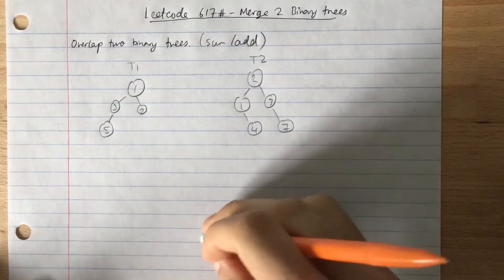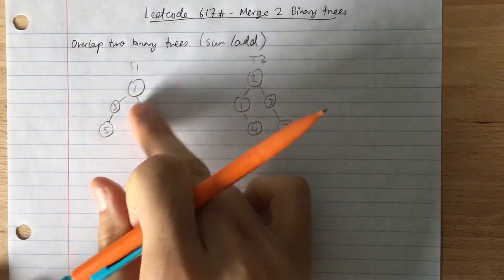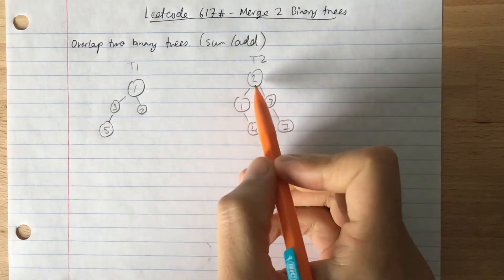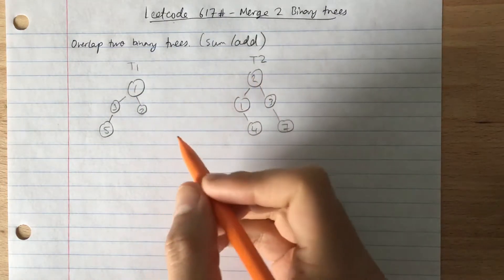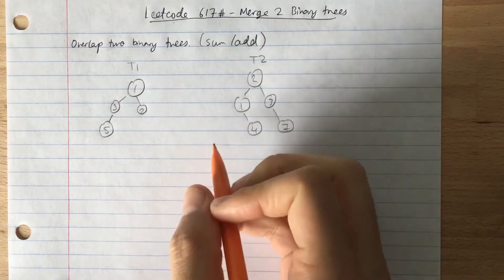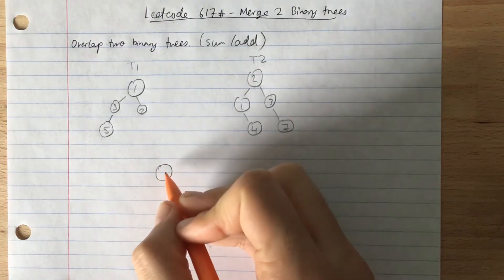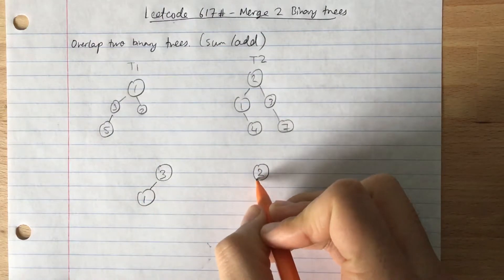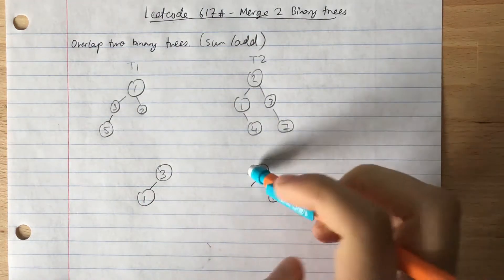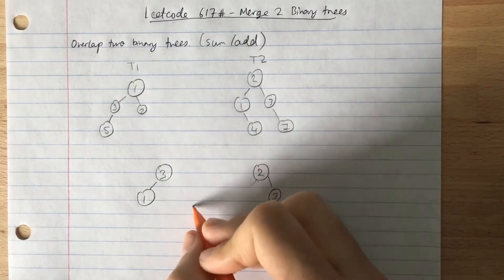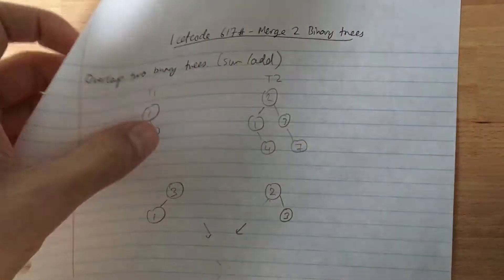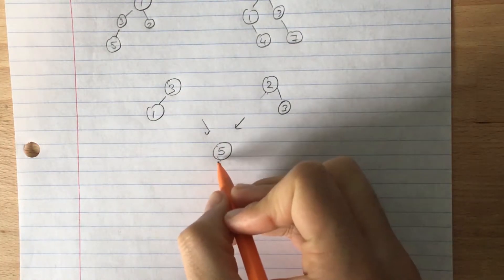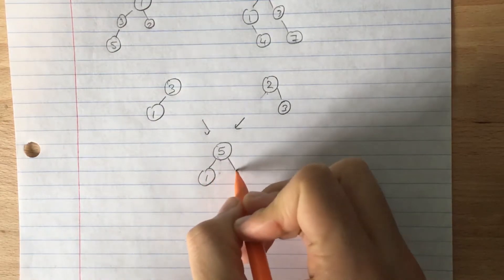And the problem doesn't say, but we're allowed to override the values for t1, essentially. That's the way we're going to do it. So let's take a simple example. We have something, say t1 is something like 3, t2 is something like 2, and say we have like 1 here, and then we have like 3 here. So the result of combining both of these trees will actually be something like this. It will be 5 with 1 and 3.